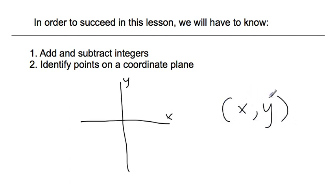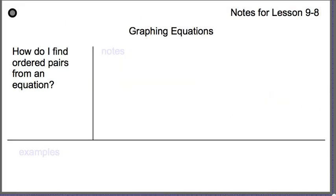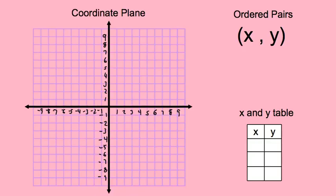We're going to be working with ordered pairs today, so that's always written as x first, then y. Our notes topic is: how do I find ordered pairs from an equation? We're going to start with an equation and then go through a series of steps to figure out what our ordered pairs are. Once you have ordered pairs, those points just get put on a graph, and hopefully your line is straight. If your line is not straight, then something went wrong.